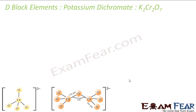The next important compound is potassium dichromate, K₂Cr₂O₇. You must have used this compound in the lab. It is used in the leather industry and also as an oxidant in the preparation of many organic compounds. It is prepared from chromate, and chromate comes from chromite ores.